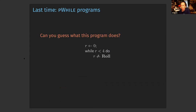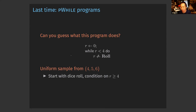P-While is a basic imperative language with a new command for random sampling. Here is a basic program: it sets R to zero, then while R is less than four, you continually roll a fair dice — assigning one-sixth probability to each outcome one through six. What's going to happen after this program is that you get a uniform sample for numbers four, five, and six. As soon as you get four, five, or six, you stop the loop. You can also view this program as generating a conditional distribution.